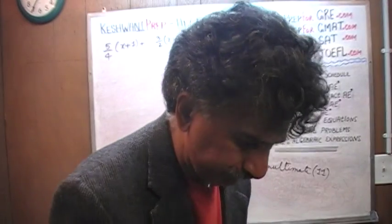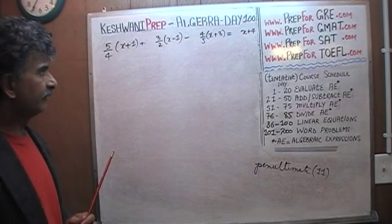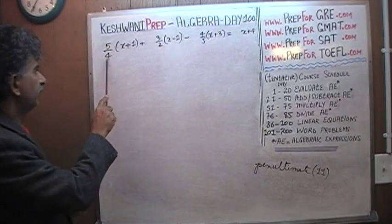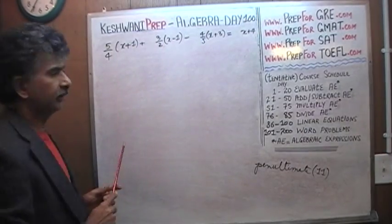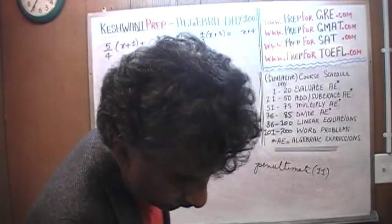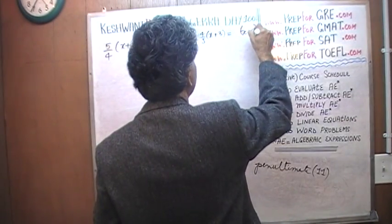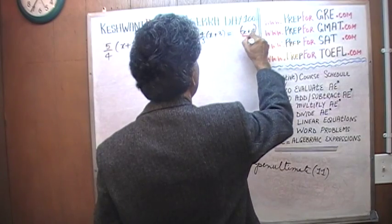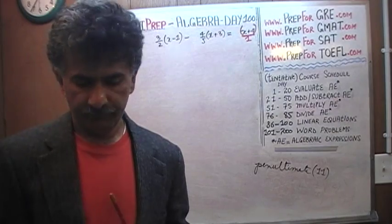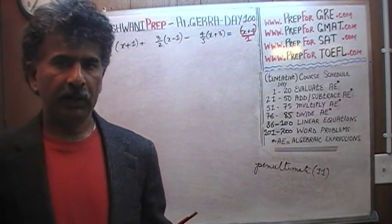Very good. Let's see what we have here. The very first thing we realize is that we have a denominator of 4 in the first term, a denominator of 2 in the second term, a denominator of 5 in the third term, and finally on the right hand side we have x plus 4 with a denominator of 1. They all have different denominators — that won't do. We must have a common denominator.